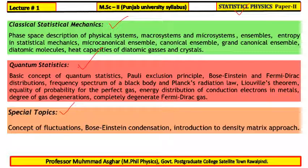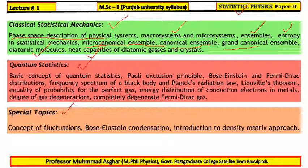In Classical Statistical Mechanics, we will start from the phase-space description of physical systems, discussing micro and macro systems, Ensembles, and Entropy in Statistical Mechanics. We will study the three types of Ensembles: Micro Canonical, Canonical, and Grand Canonical Ensembles, and finally the diatomic molecule heat capacities of diatomic gases and crystals.